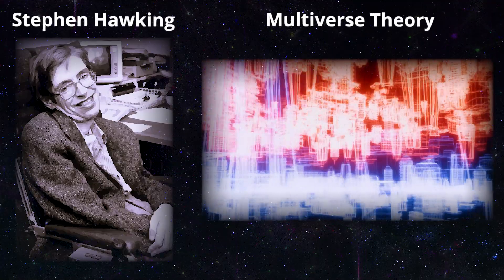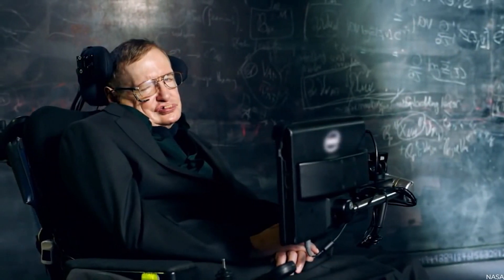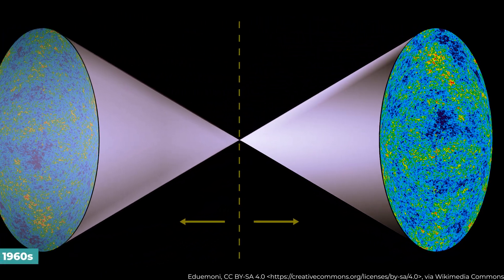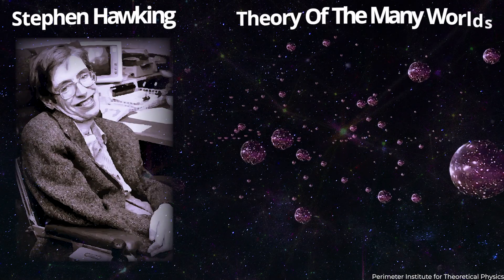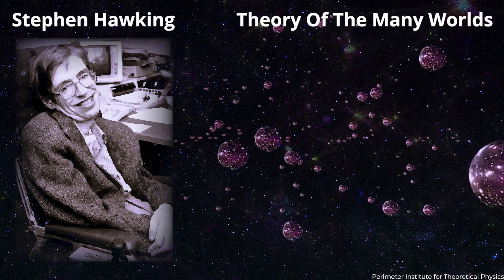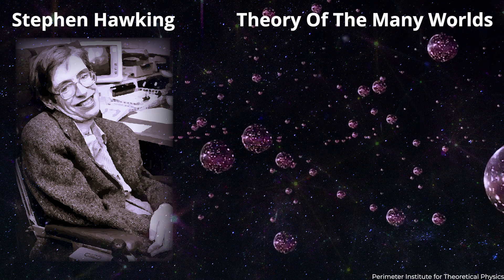So, how does Stephen Hawking's multiverse theory prove that the Big Bang was wrong? Stephen Hawking was a brilliant scientist who came up with a theory of a multiverse in the 1960s. He said that our universe is just one of many, all separated by an infinite distance. He called this his theory of the many worlds.